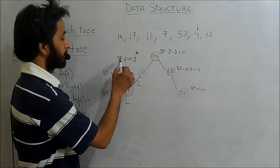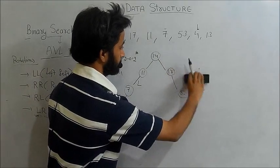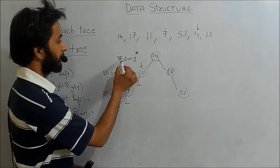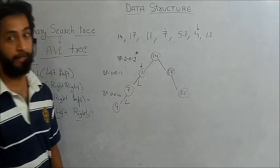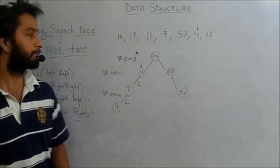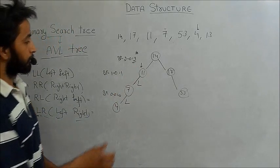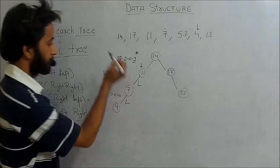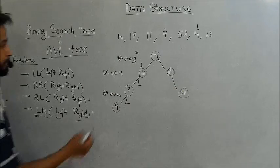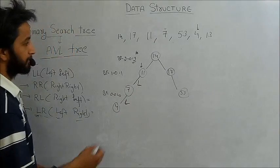The balance factor at node 11 creates a problem because it is 2. AVL tree requires the balance factor to be 0, -1, or +1. The problem is due to left-left, so we apply LL rotation to maintain the balance factor within the allowed range.